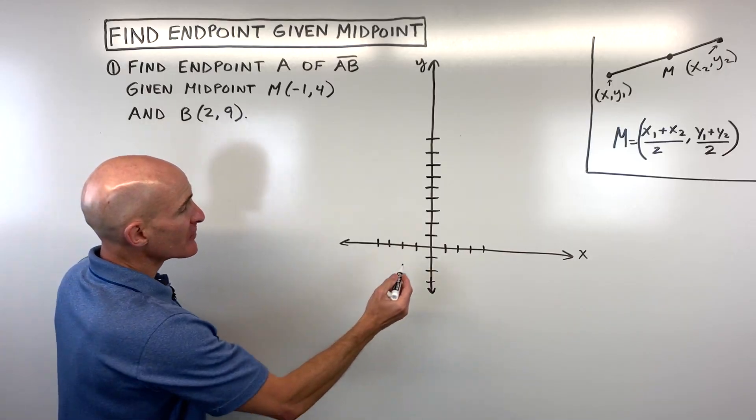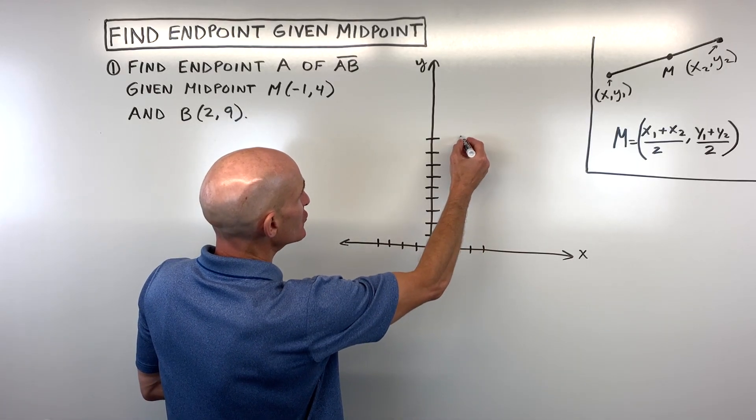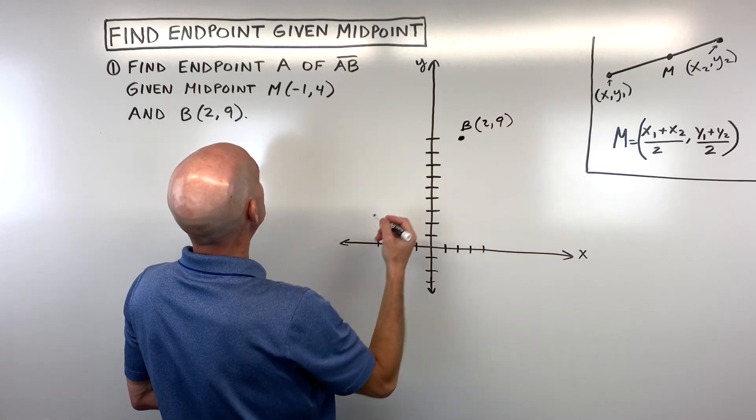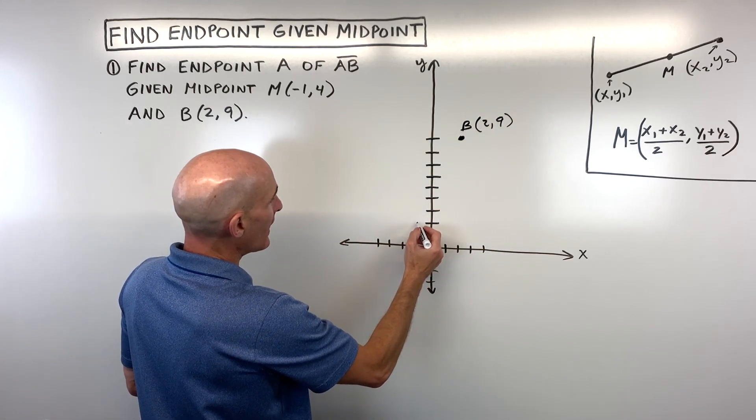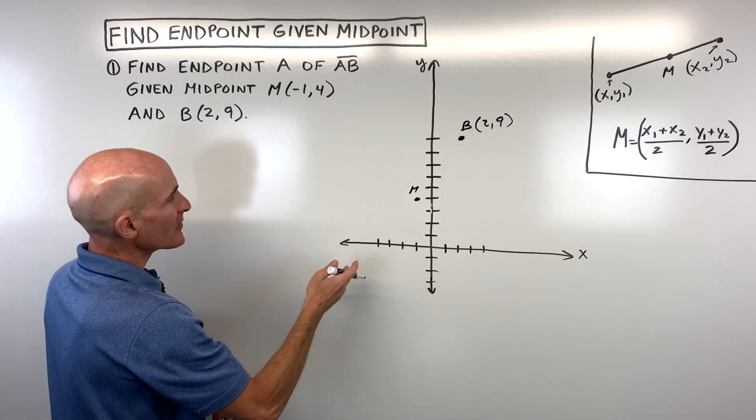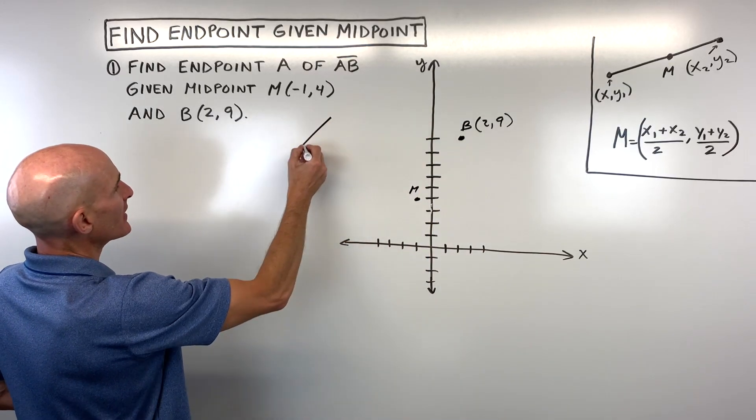Now let's graph it. You don't have to graph this each time that you do these problems, but just to kind of help us to visualize. So here's B at two, nine. Here's our midpoint at negative one, four. And if we were to draw this segment, it basically looks something like this.